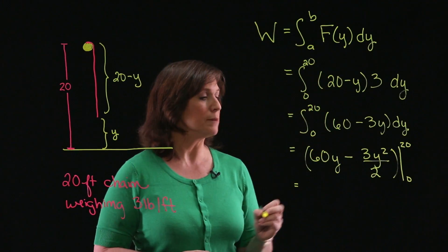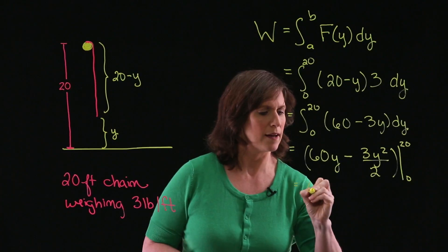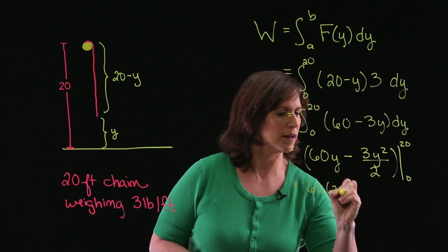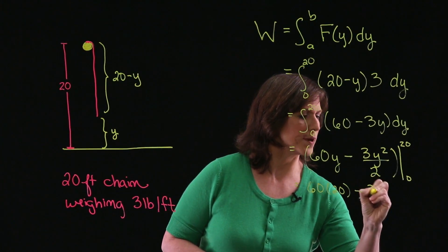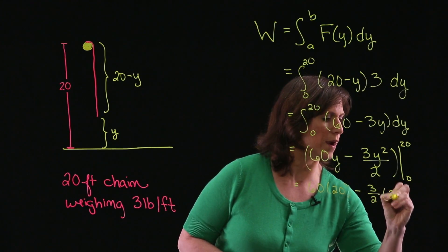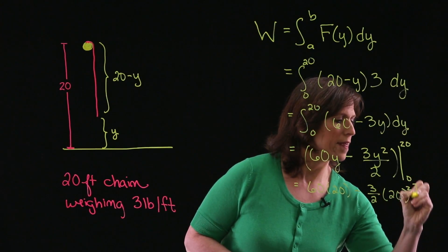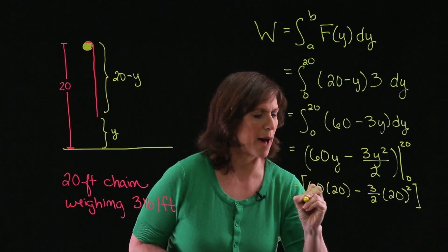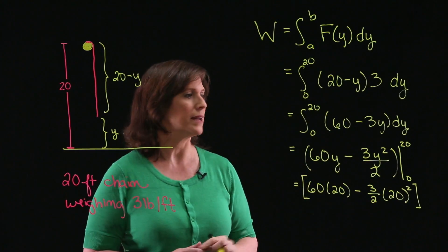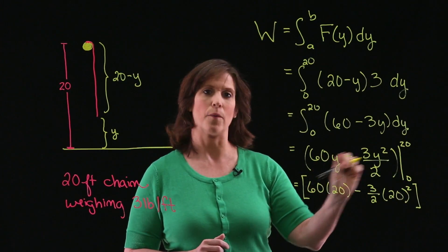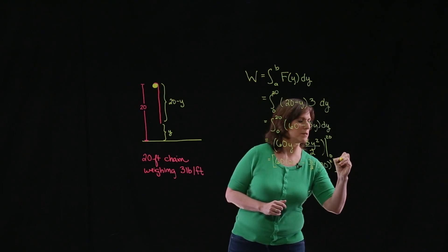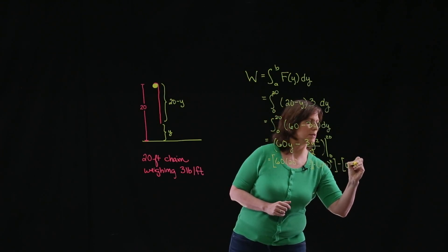Plugging in my upper limit, I'll have 60 times 20 minus 3 halves times 20 squared. Then I need to subtract what happens when I plug in my lower limit. But notice that lower limit is 0, and when I plug that in, I'm just going to be subtracting 0 minus 0.